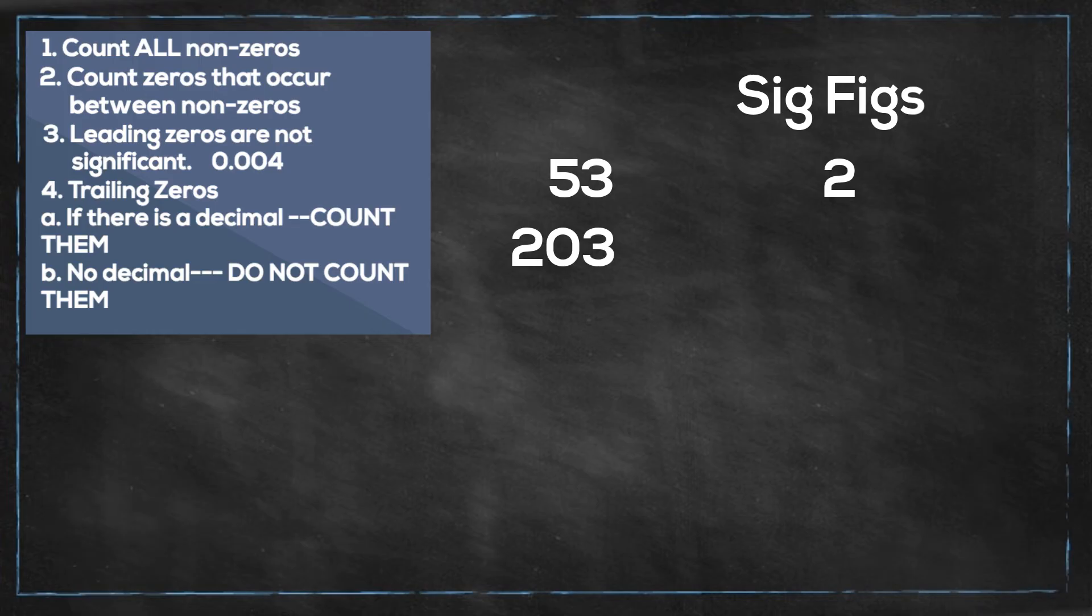Next 203. Again, you have two non-zeros, the 2 and the 3. But you have a zero in between. So you will have three because you will count them all.